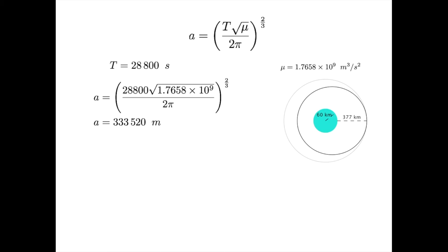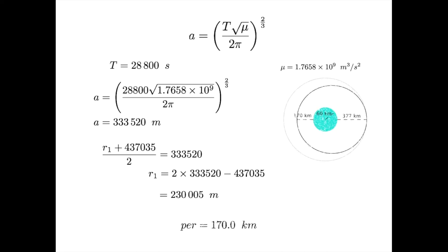r2 is 437,035 meters. We substitute, multiply the two over and subtract the r2 to get an r1 of 230,005 meters. Once again, we subtract off the radius of Minmus to get a periapsis of about 170 kilometers.